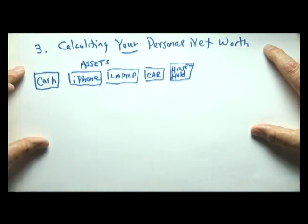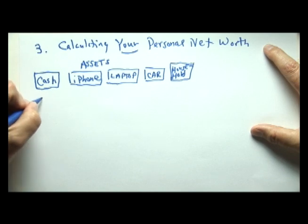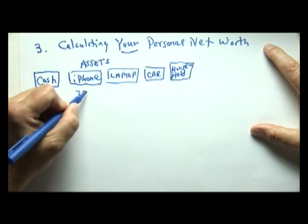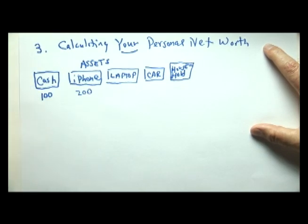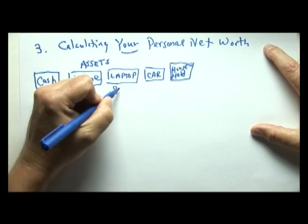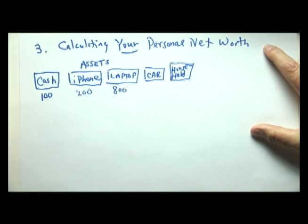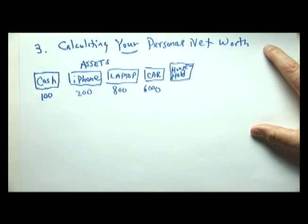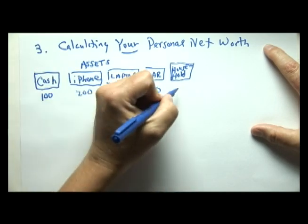Let's say you have $100 in the bank. Your iPhone — using replacement value — is $200. Your laptop you could replace for $800. Your used car has a market value or blue book replacement value of $6,000. And your household effects — your bed, TV, and clothes — are worth $2,000.